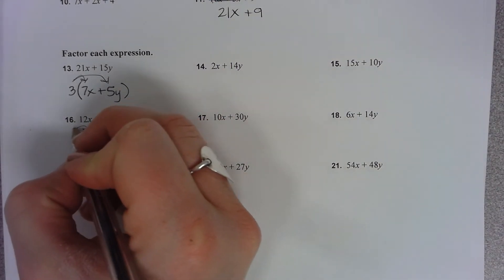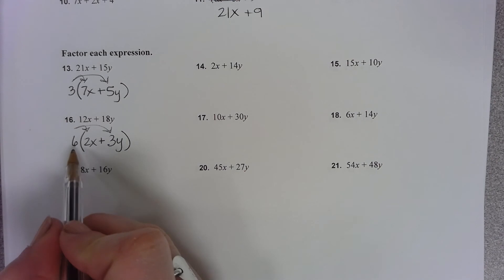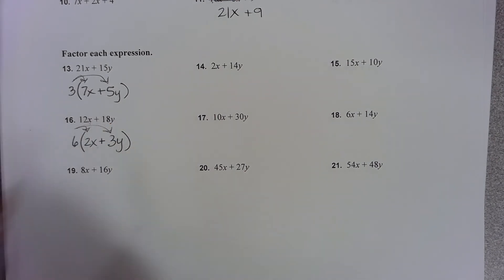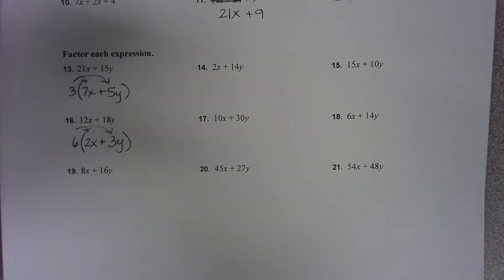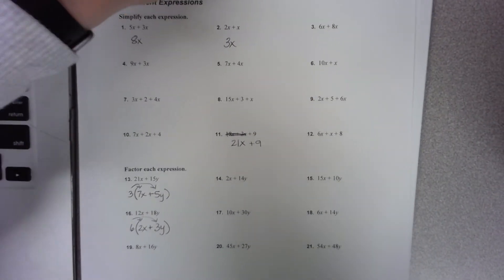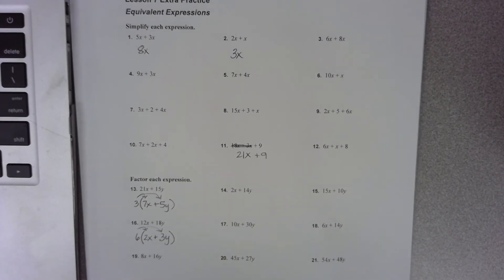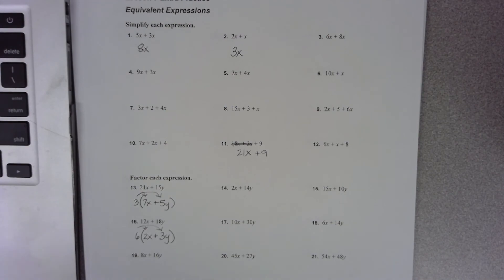Again, you can use your distributive property arrows to double check. 6 times 2x is 12x. 6 times 3y is 18y. And that would be your answer. Okay, so I will attach a picture of this assignment if you didn't get a paper copy of this. Otherwise, you are completing the rest of the problems on here for your homework today. Let me know if you have any questions.